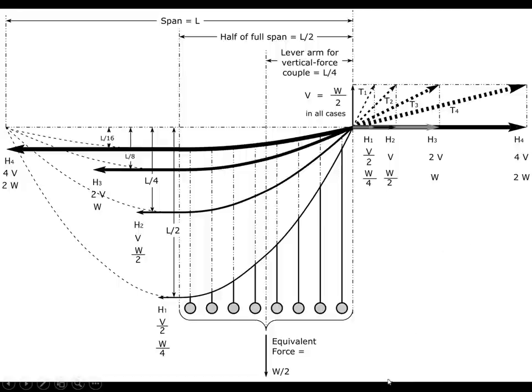This shows a bunch of various sags for the suspension element superimposed on top of each other. In each case we have a certain load which is W over 2, where the rest of the W would have been on the other member. We have a support force that has to be W over 2, the vertical force. That doesn't change as we change the sag.